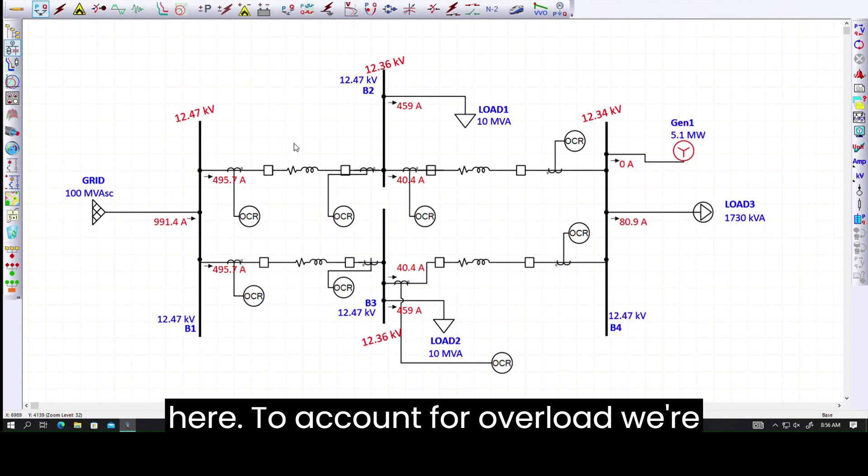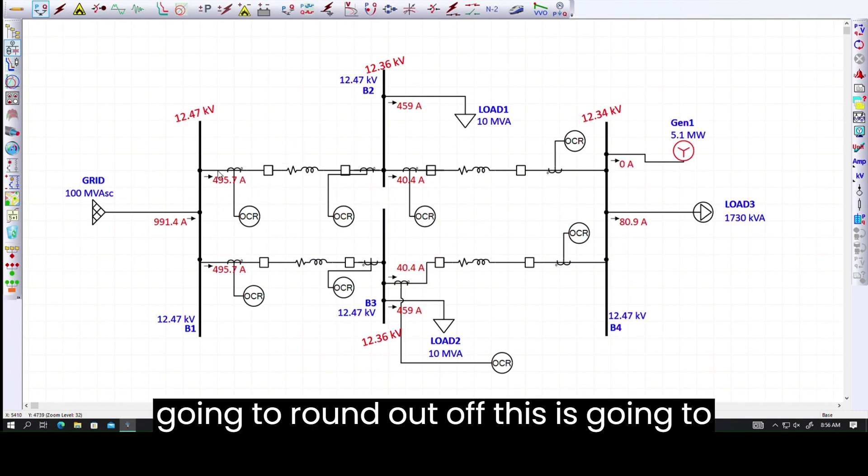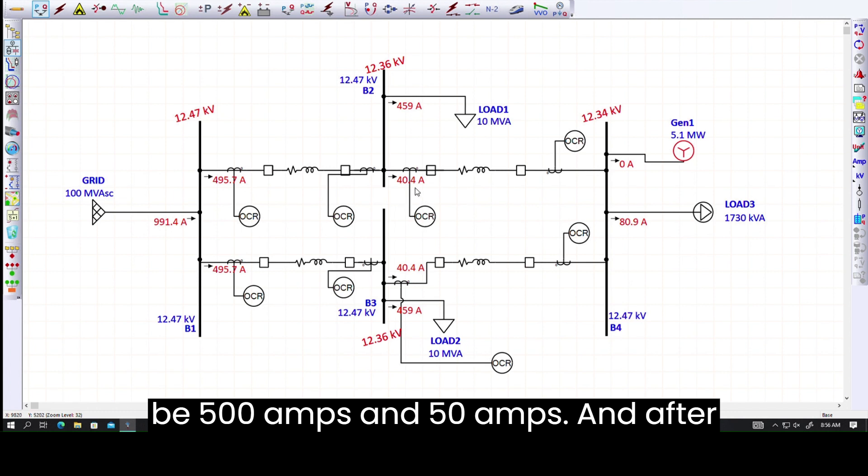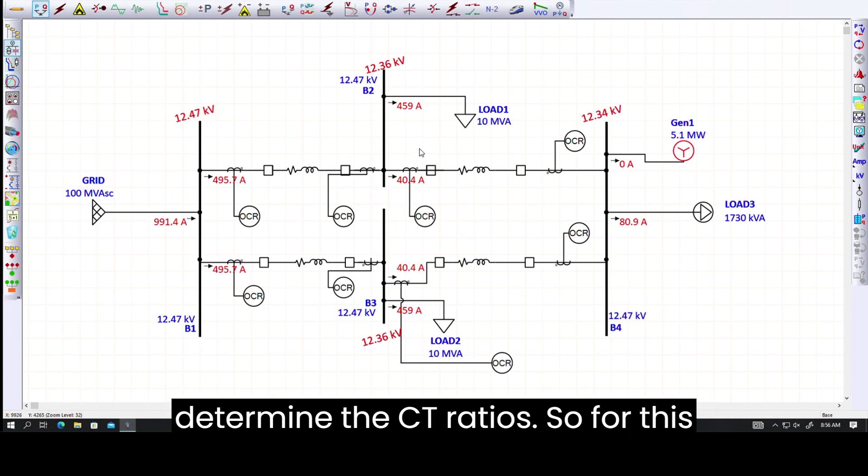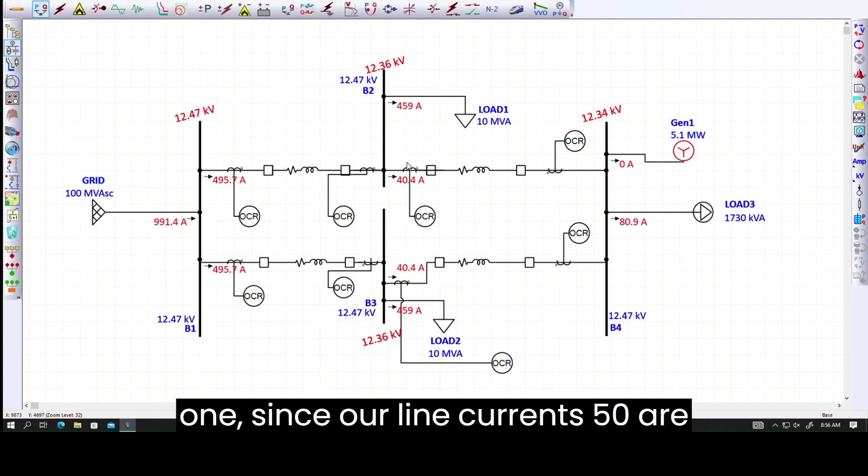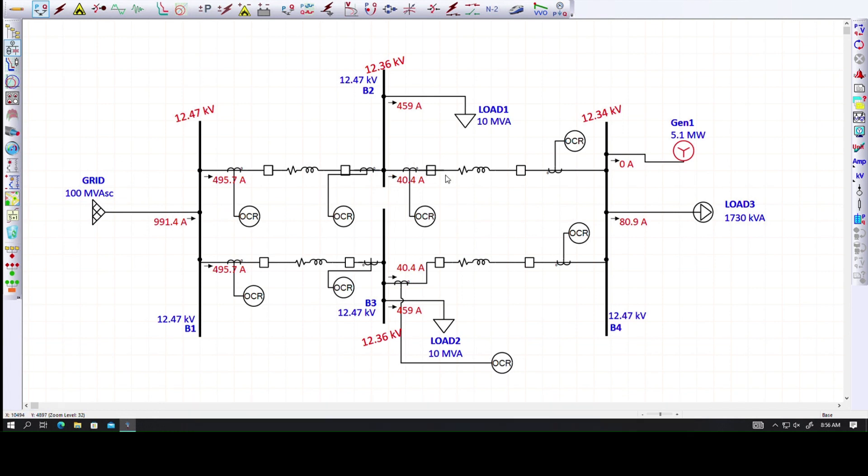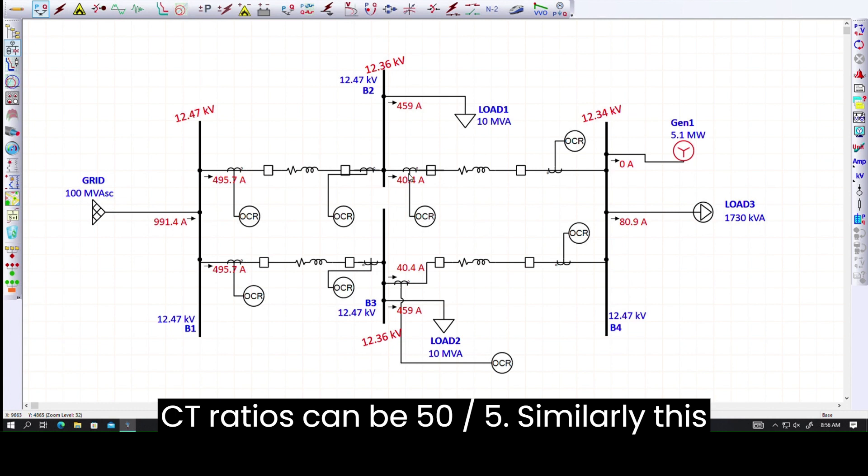To account for overload, we're going to round that off. This is going to be 500 amps and 50 amps. After determining our line currents, we can determine the CT ratios. For this one, since our line current is 50, our CT ratio can be 50 over 5.